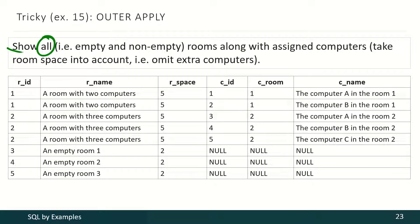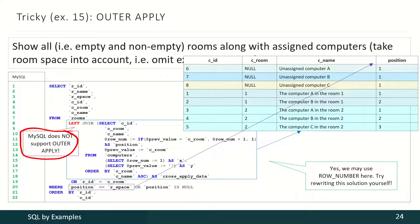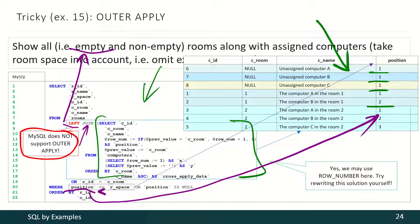Now we have to show all rooms — both empty and non-empty — along with assigned computers, and we have to take room space into account, meaning we have to omit extra computers. Nothing has changed in MySQL during the last couple of minutes, so we have to follow the same approach as in the previous solution. We have to produce the numbered list of all computers and restart the numbering for each new room. Then we have to use left join instead of inner join — this left join gives us empty rooms also. And like in the previous solution, we want the position of the computers in this list to be less or equal to the space of the room. And that's our final result.